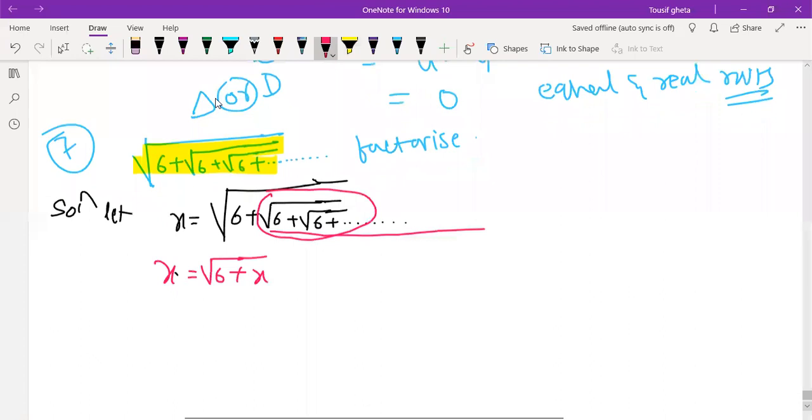Now square on both sides. If you do square on both sides you will get x square is equal to 6 plus x.